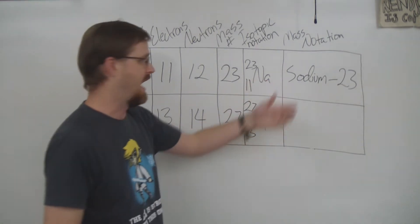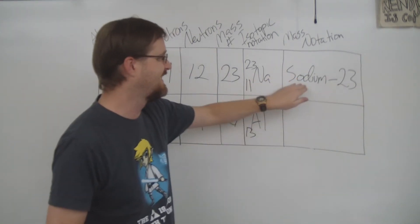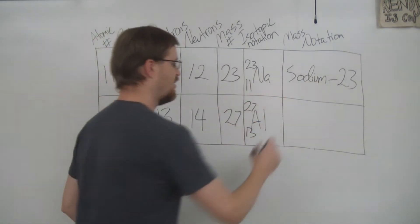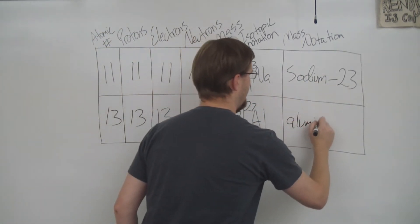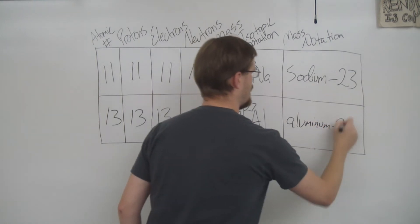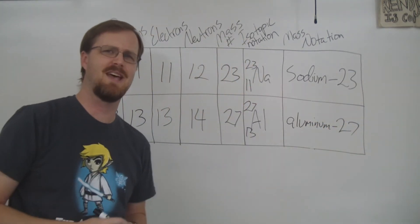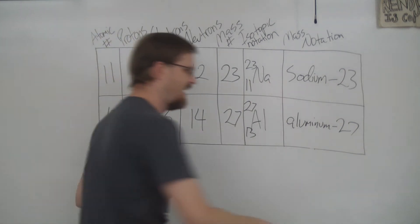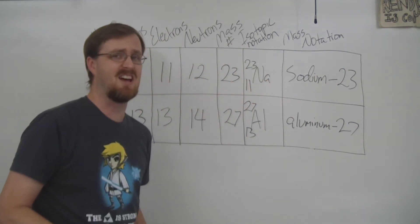Last but not least, the mass notation. As you can see, it is the name dash the mass number. So we write out aluminum-27.